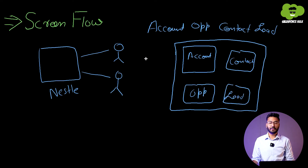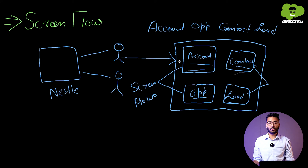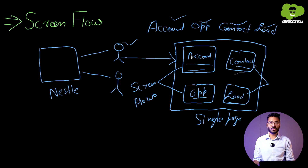What the sales representatives want is a single page with different components — one for account creation, one for contact creation, one for opportunity creation, and one for lead creation. With this single page, they can create account records, contact records, opportunity records, or lead records all in one place. This is exactly what screen flow enables, and this is just one use case — there are many more scenarios where screen flow applies.